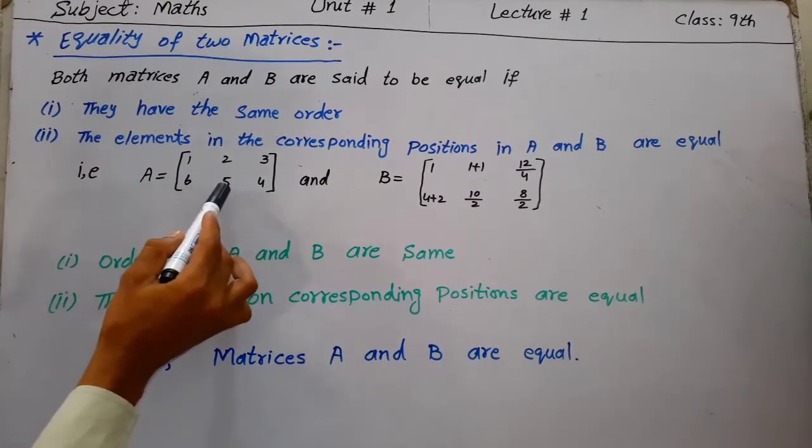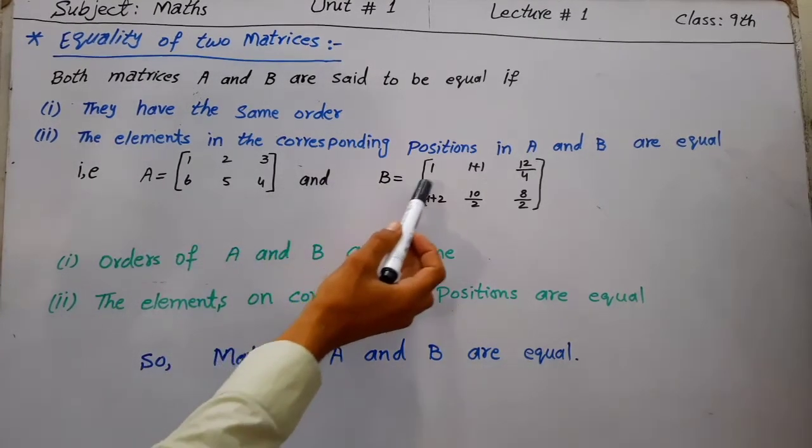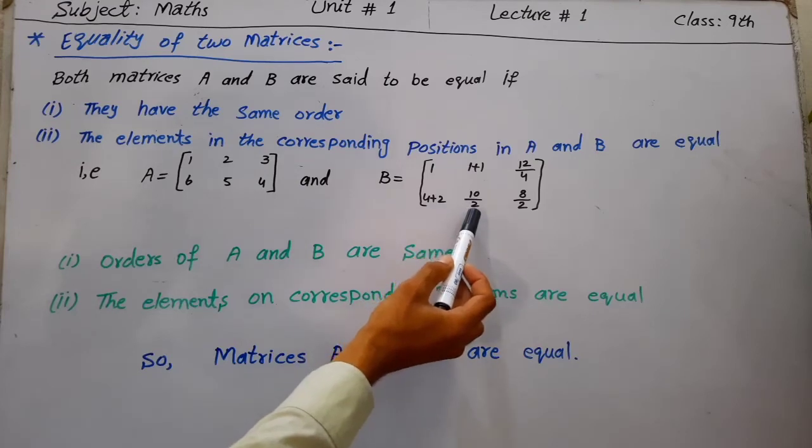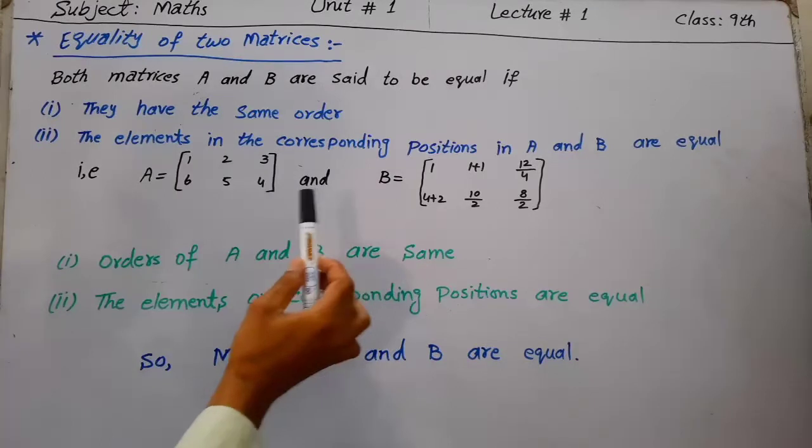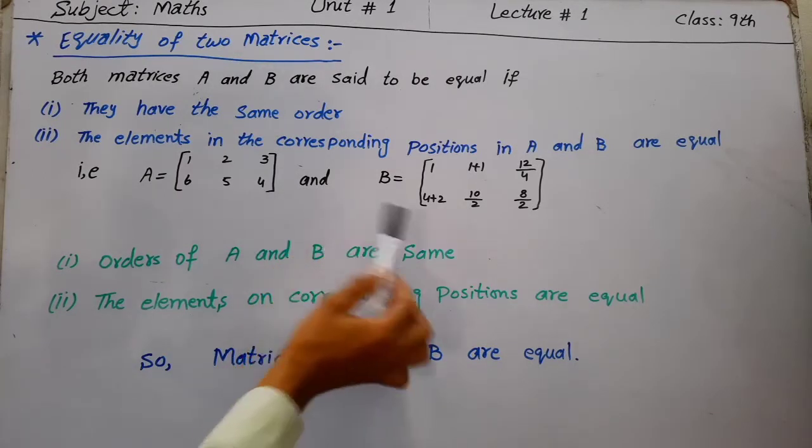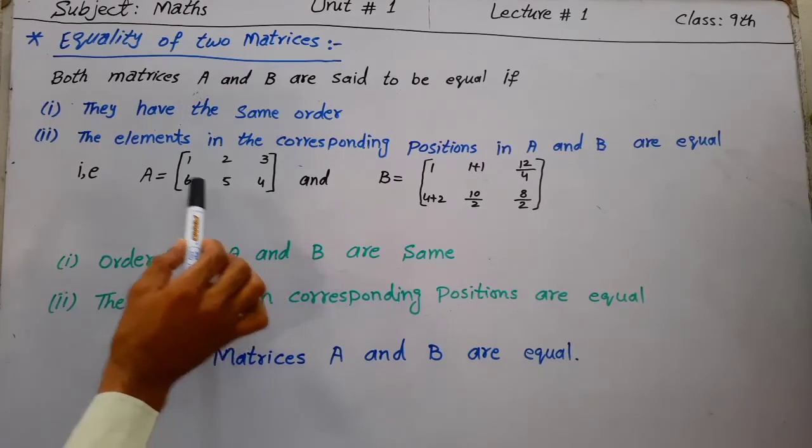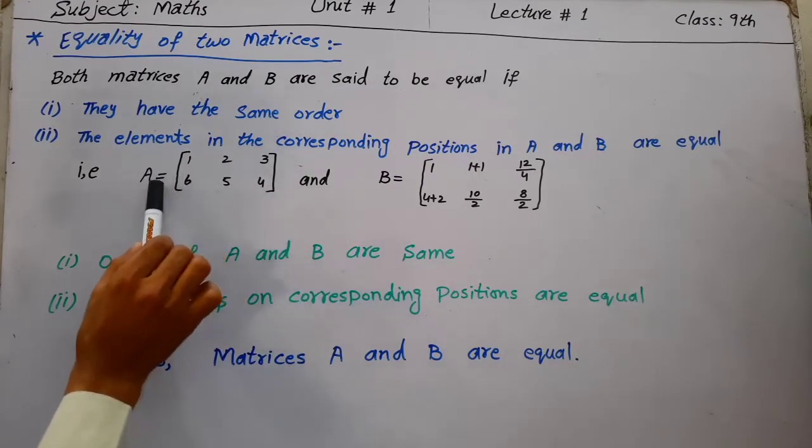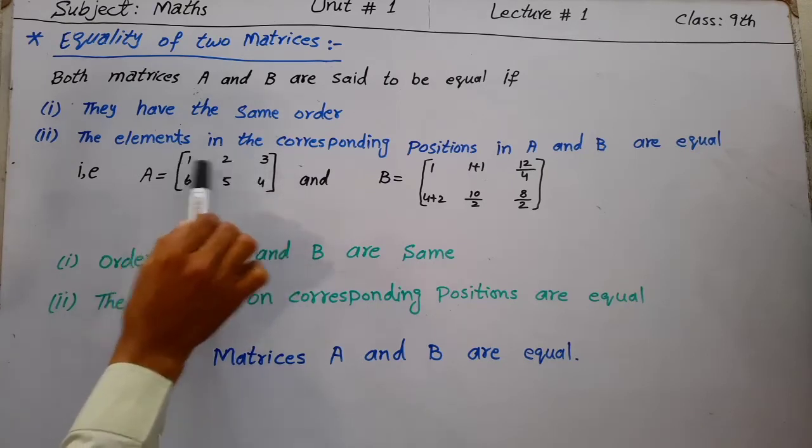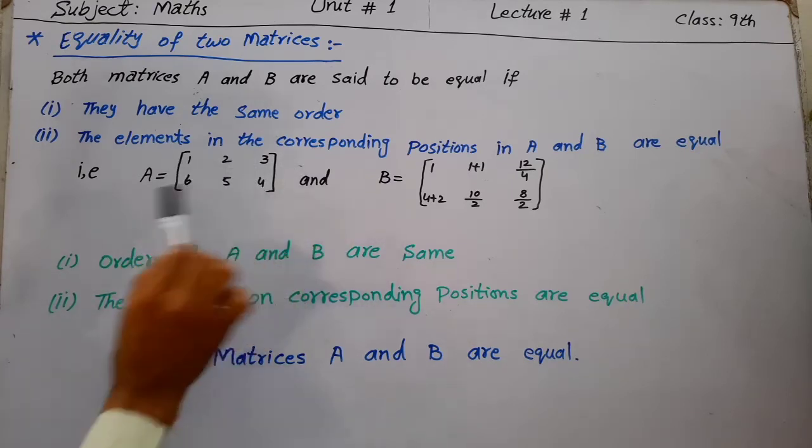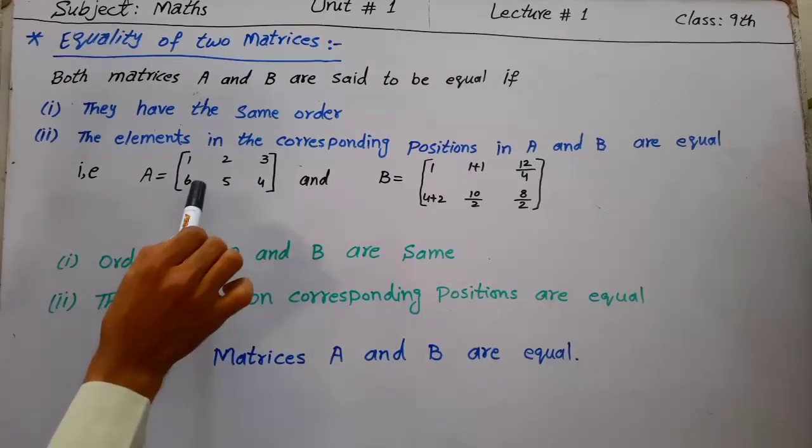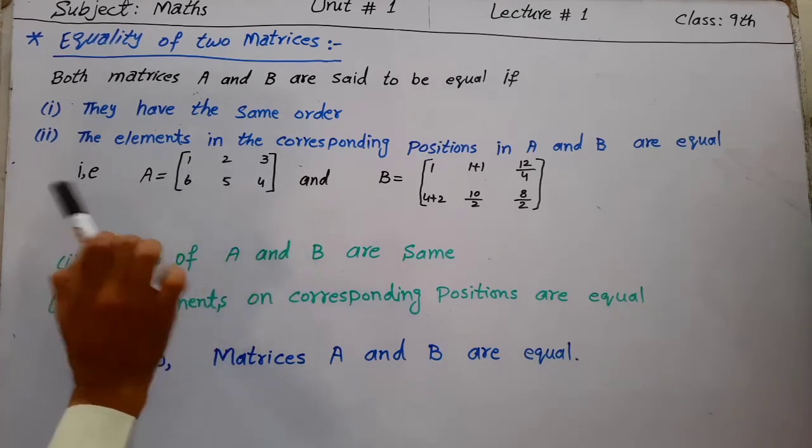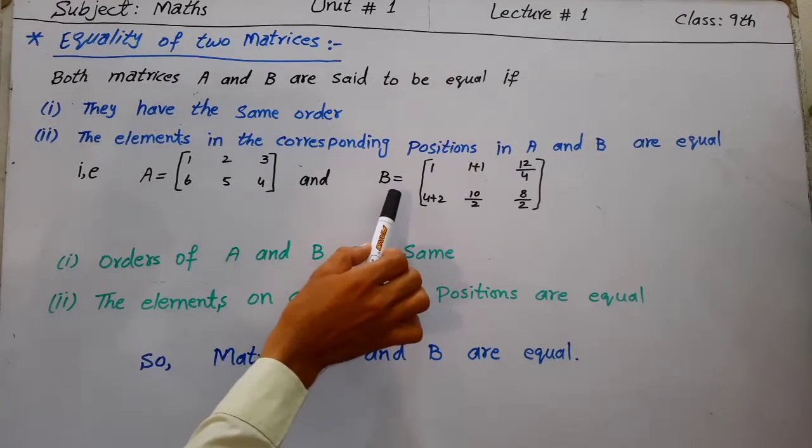For example, matrix A is [1 2 3; 6 5 4] and matrix B is [1 (1+1) (fell by 4); (4+2) (10/2) (8/2)]. Matrix A has order 2 by 3: rows are 1, 2, 3 and 6, 5, 4; columns are 1, 6 then 2, 5 then 3, 4.